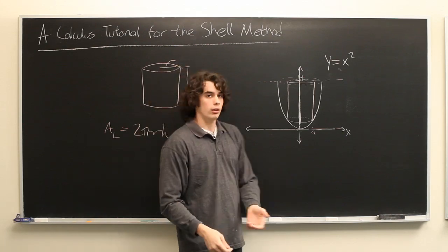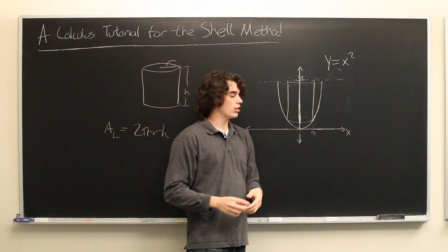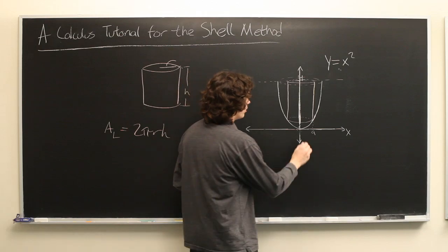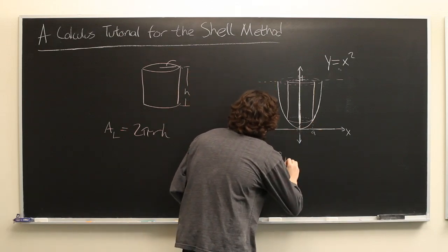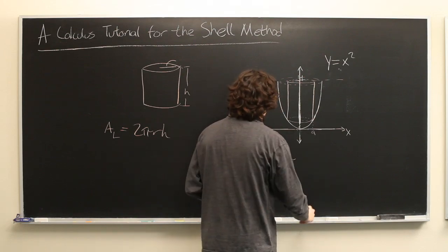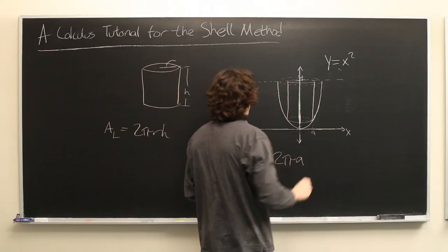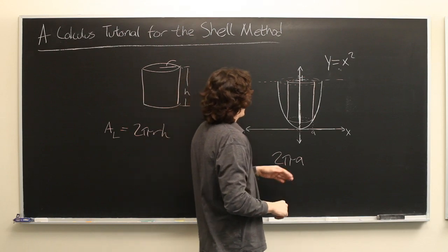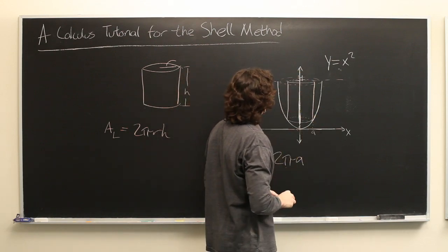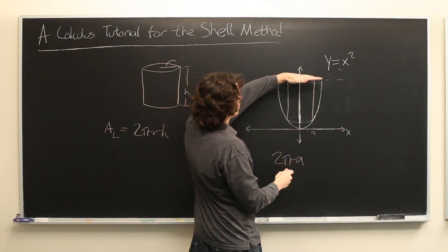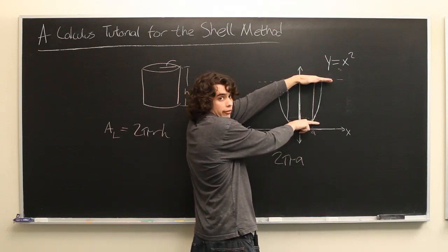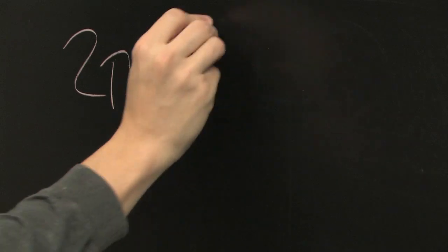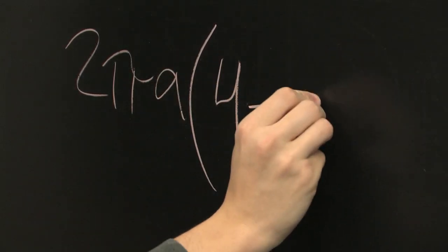As we've said before, it's 2πrh. In this case, r is just a, so we get 2πa (or x, depending on how you want to say it). And then what is the height? The height is this line minus y(x), so that's going to be 4 minus a squared.